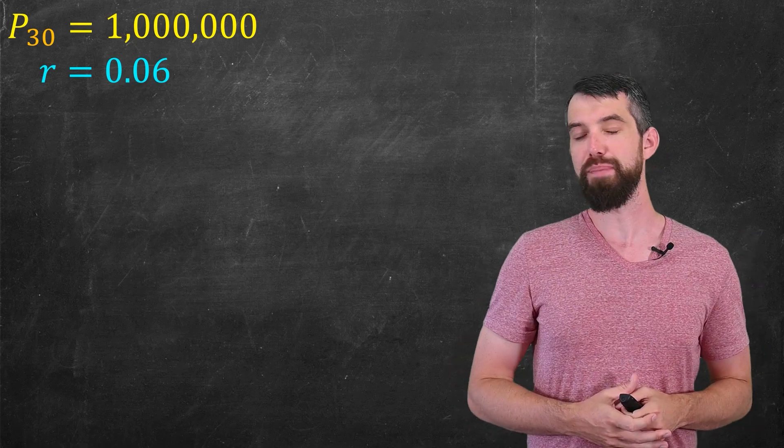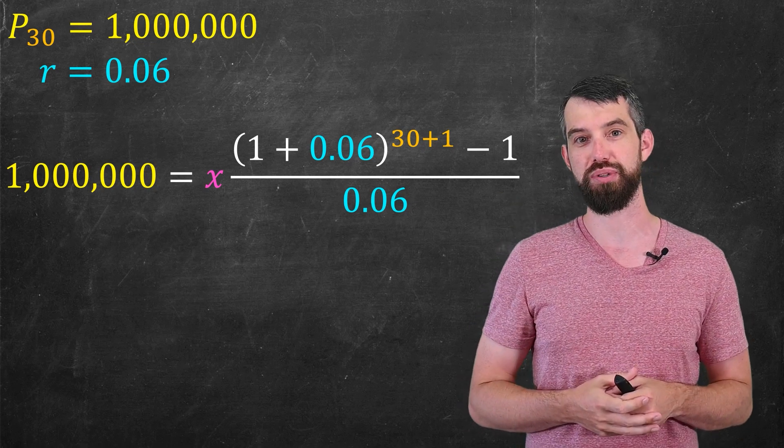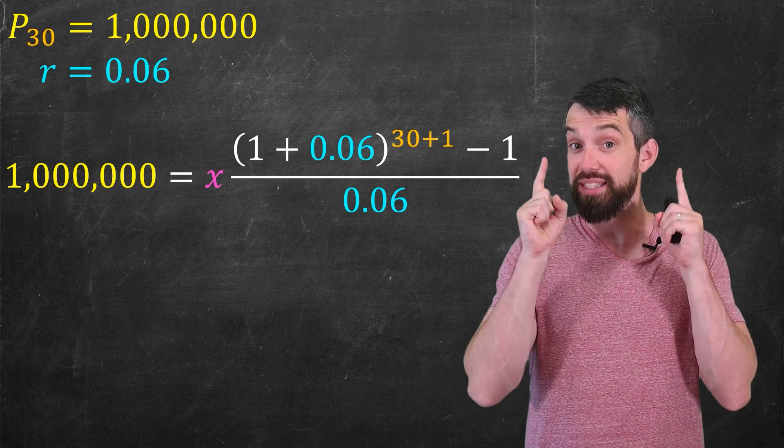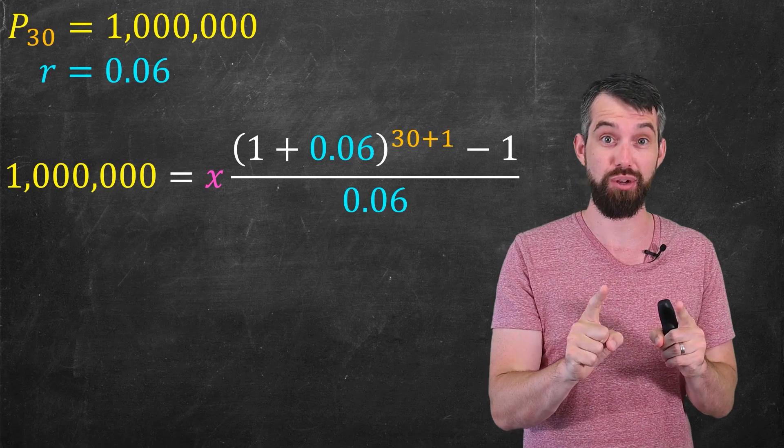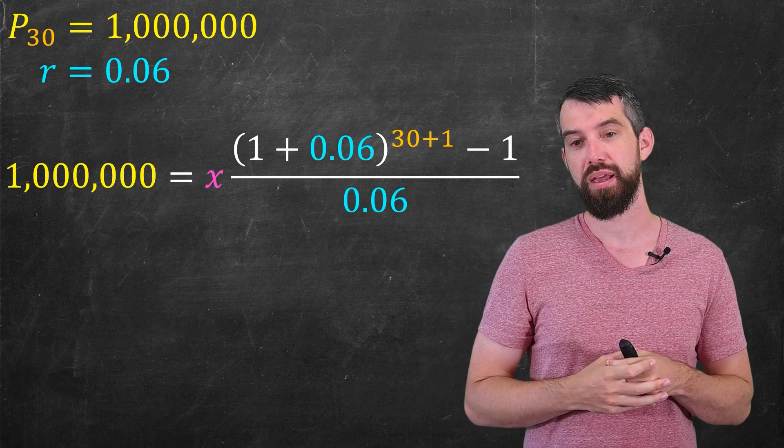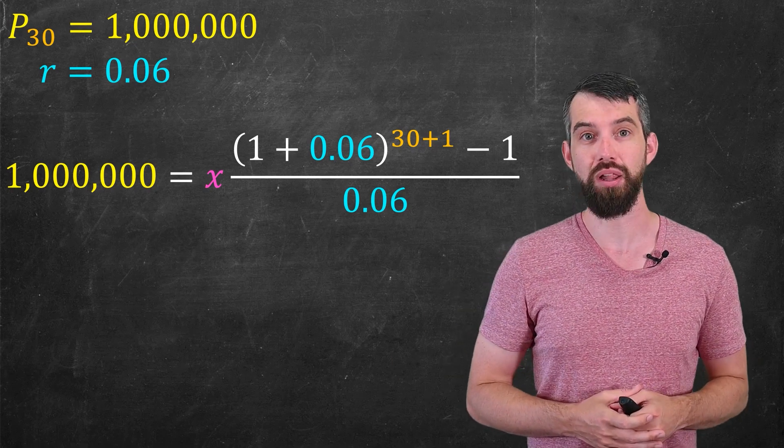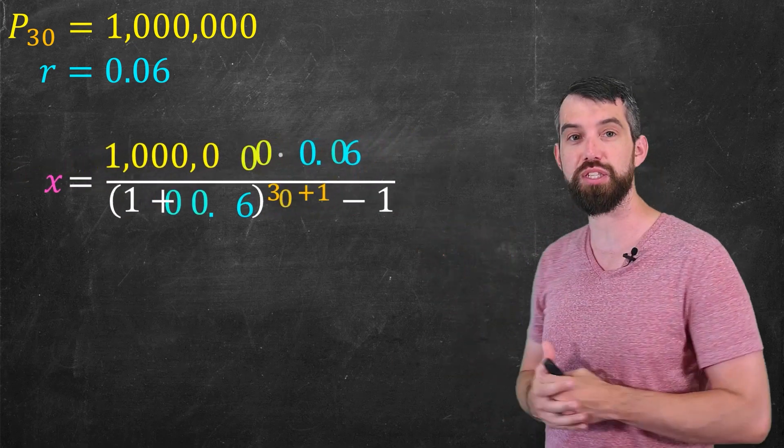If I plug those numbers into the formula I just had, I plug in the million, I plug in the r equal to 0.06, and I plug in that the t was 30. Notice the formula is always t plus 1, so 30 plus 1 in the exponent. Now, I want to solve for x, so I can just rearrange this equation. Not a big deal. I've rearranged this equation, and this is what I have.